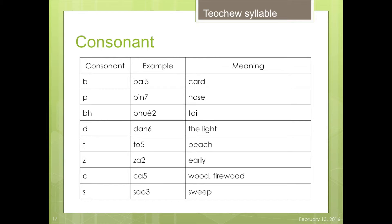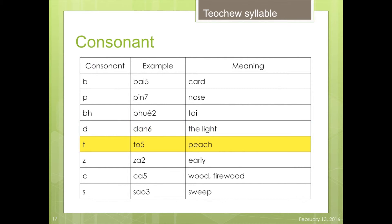The next thing is consonant. For each consonant, I also give one example word. Let's get started. For example, 'ỏi' is meaning car. For example, 'he' is meaning no. For example, 'where' is meaning tell. The example, 'there' is meaning the line. The example, 'thoi' is meaning pick. The example, 'cha' is meaning early. The example, 'cha' is meaning wood or fried wood. The example, 'xào' is meaning to speak.